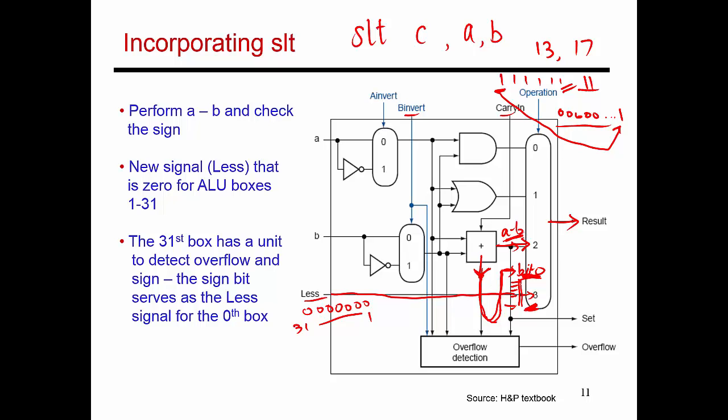So set on less than is as simple as performing A minus B, throwing out most of that result, just taking the most significant bit, which tells me if this is positive or negative, making that bit number 0, making all the other bits 0, and then selecting that appropriate result and having that come out of this 32-bit ALU.